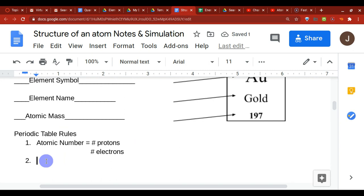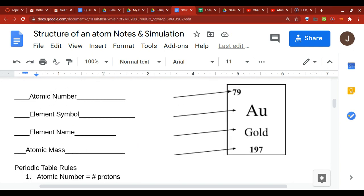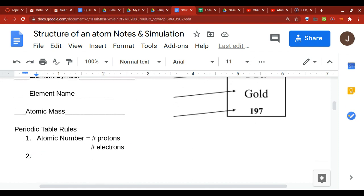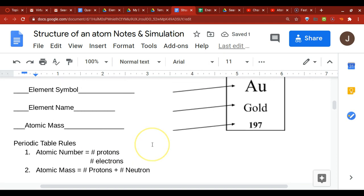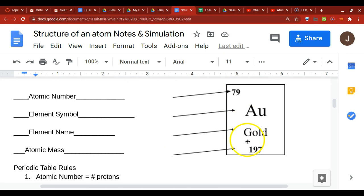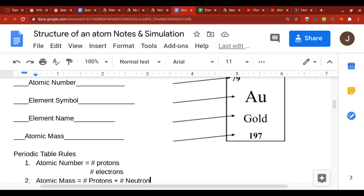So that leaves us with our neutrons. How do we figure out how many neutrons we're dealing with? Because if we look up here, gold has 79 protons and 79 electrons. So this is where we have to use our atomic mass. So the atomic mass is equal to the number of protons plus the number of neutrons. So that means if we know we have 79 protons, our total mass is 197. Then you just subtract the two, and that gives you the number of neutrons.